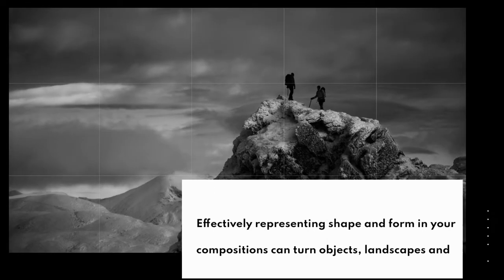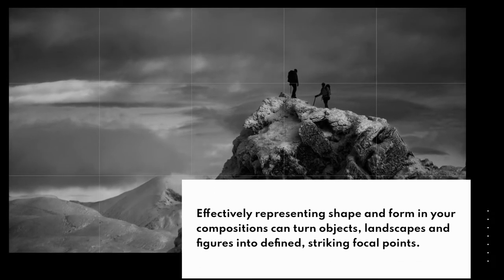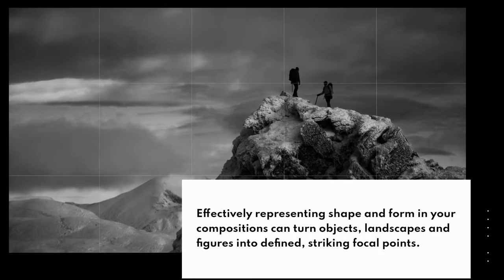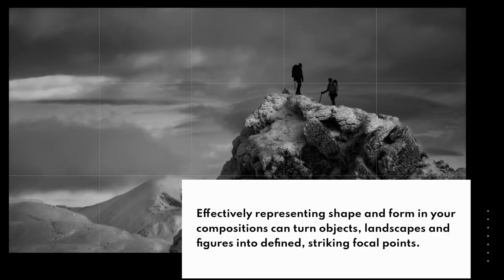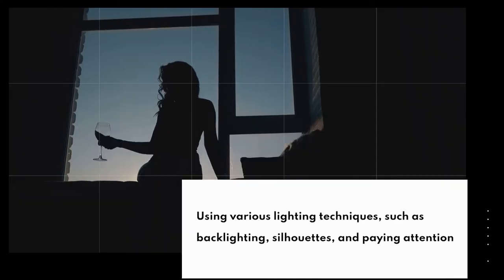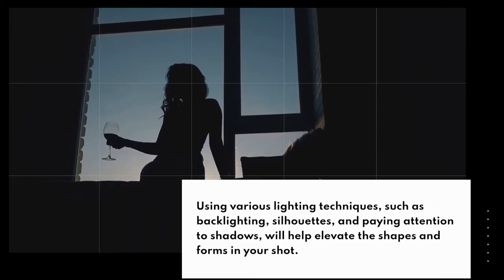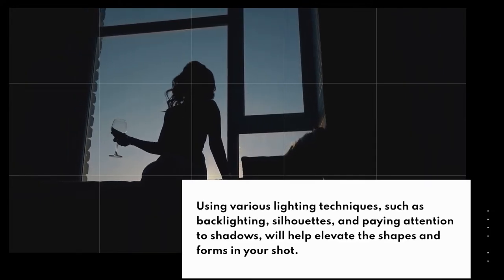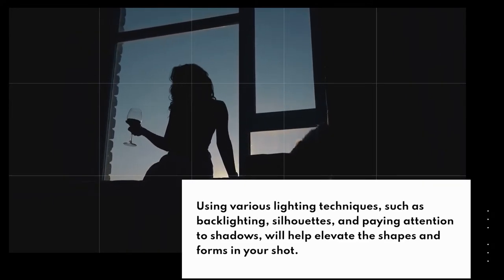Effectively representing shape and form in your compositions can turn objects, landscapes, and figures into defined, striking focal points. Using various lighting techniques, such as backlighting and silhouettes, and paying attention to shadows will help elevate the shapes and forms in your shot.